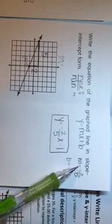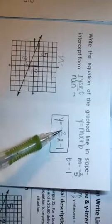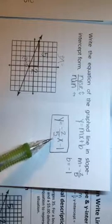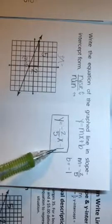So we put all of this together. We get y equals negative 2 over 5x minus 1.